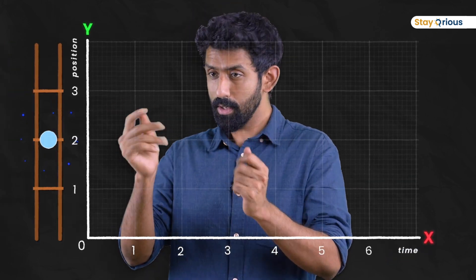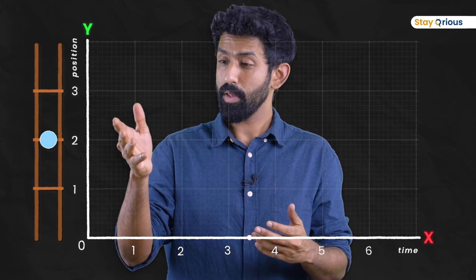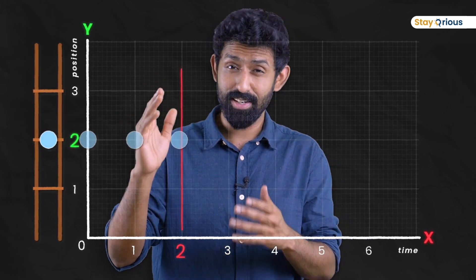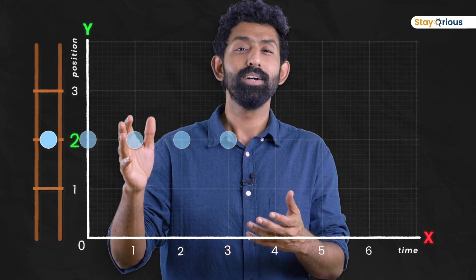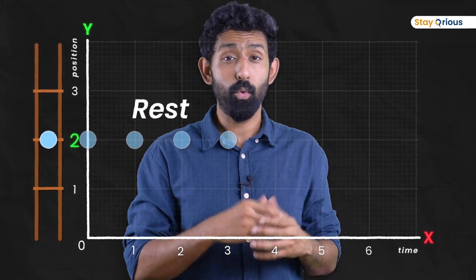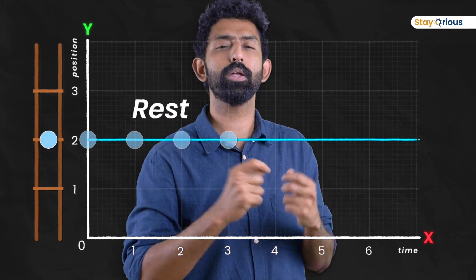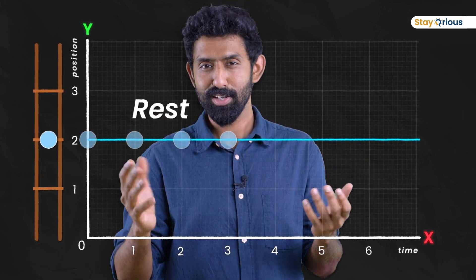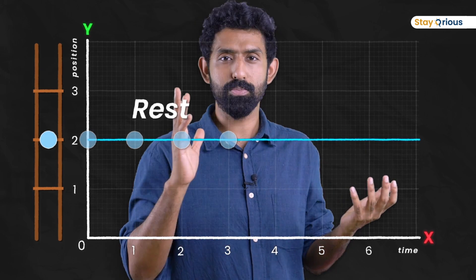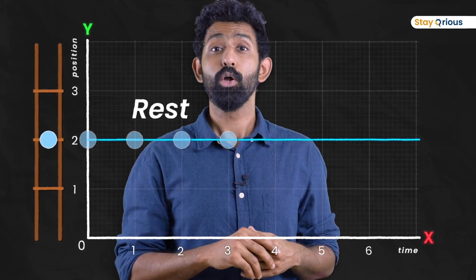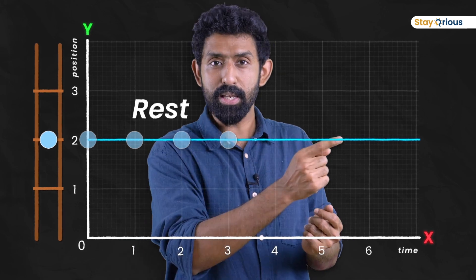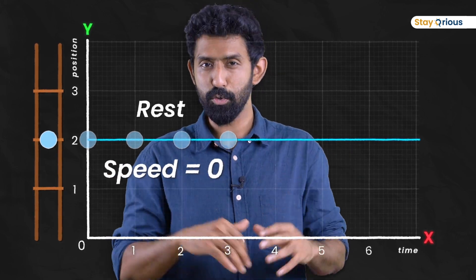Now I'm going to create a ball and make it stay there. Where is it? It's there. Next second, it's there. Next second, it's there. Next second, it's there. This is what we call rest — the position not changing. If you join the dots, what kind of a line are you getting? Flat. So a flat line just means the body is at rest. You can say something about the speed: flat line means the speed is zero.